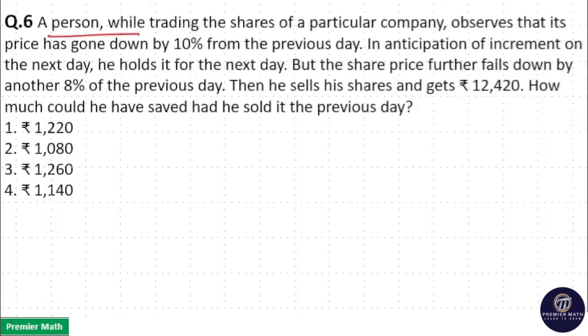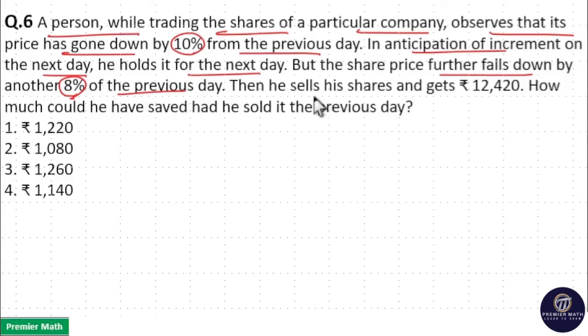A person while trading the shares of a particular company observed that its price has gone down by 10% from the previous day. In anticipation of increment on the next day, he holds it for the next day. But the share price further falls down by another 8% of the previous day. Then he sells his shares and gets $12,420. How much could he have saved had he sold it the previous day?